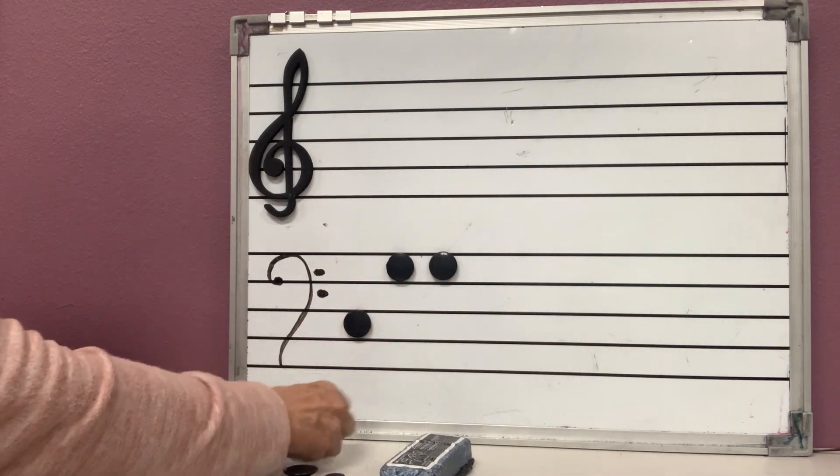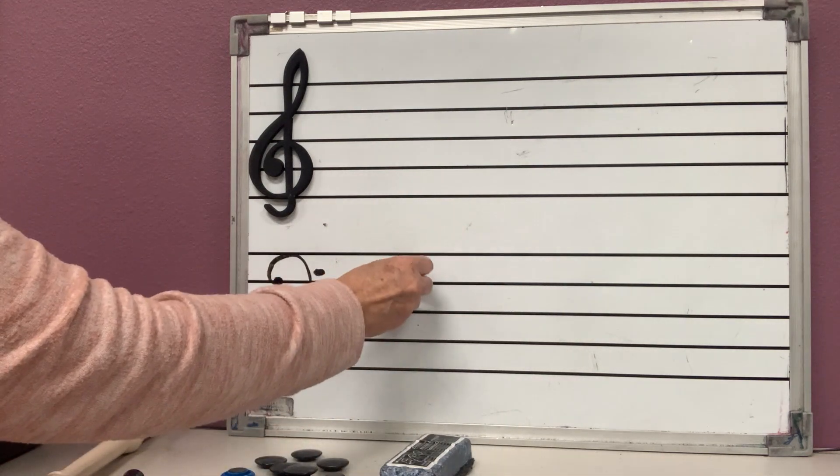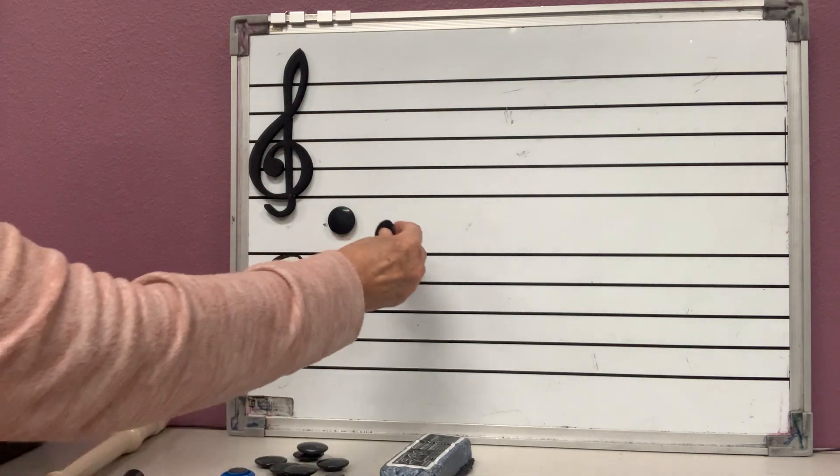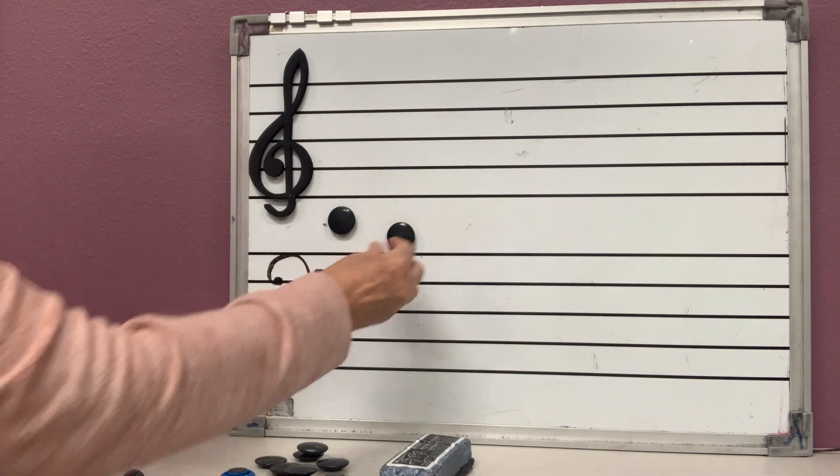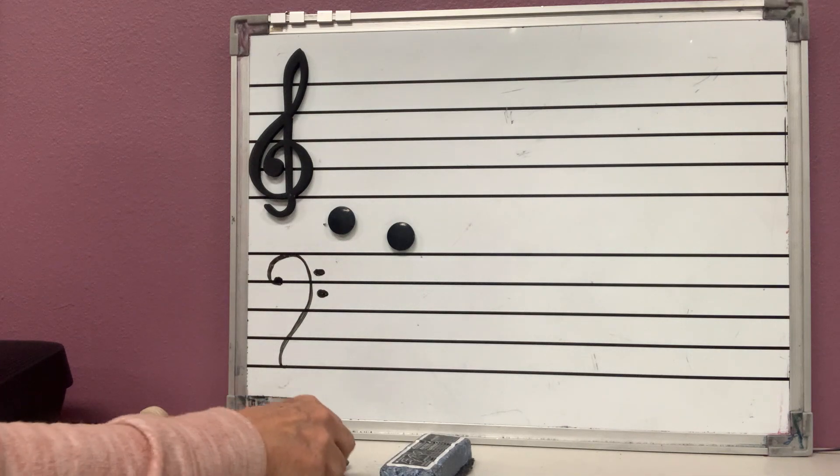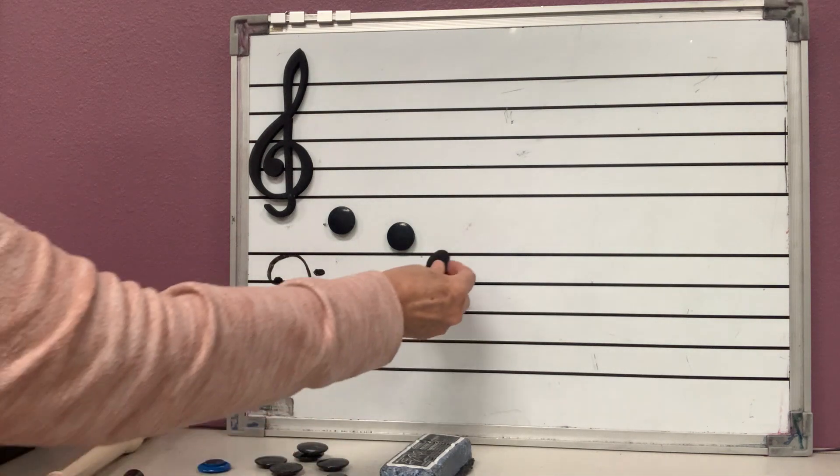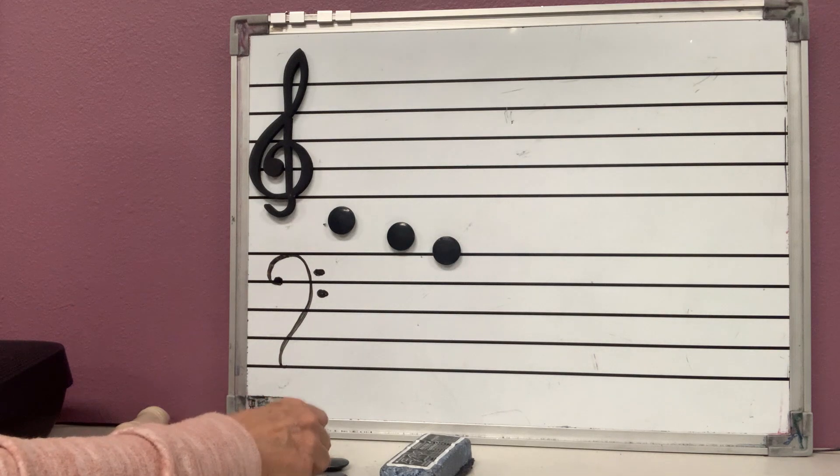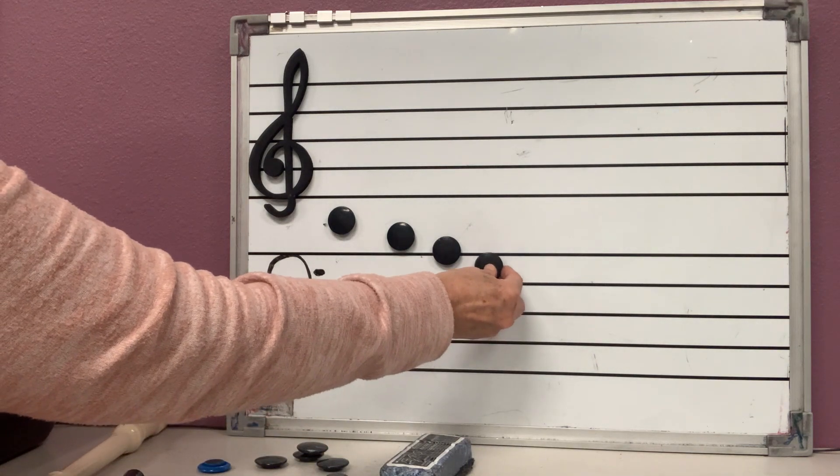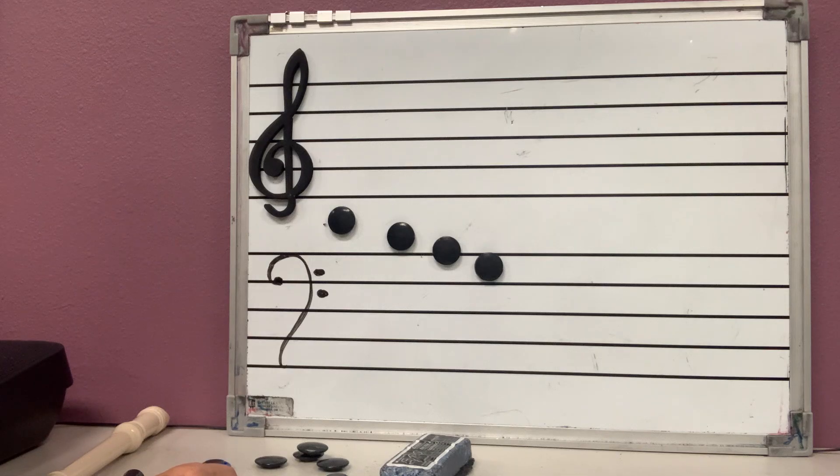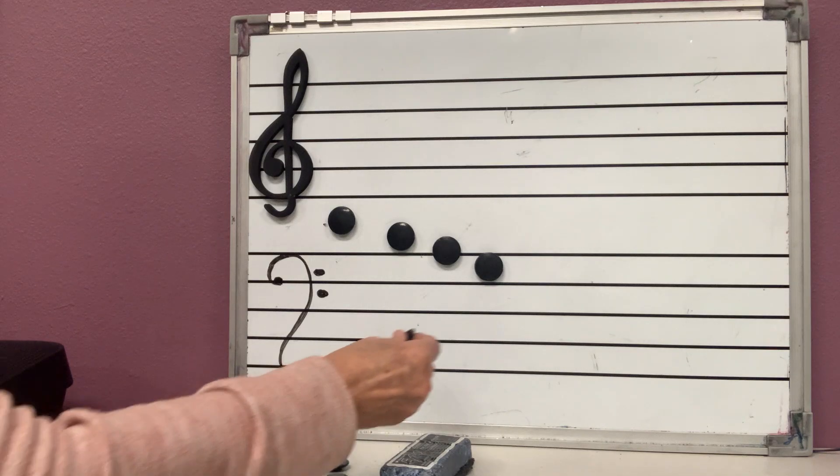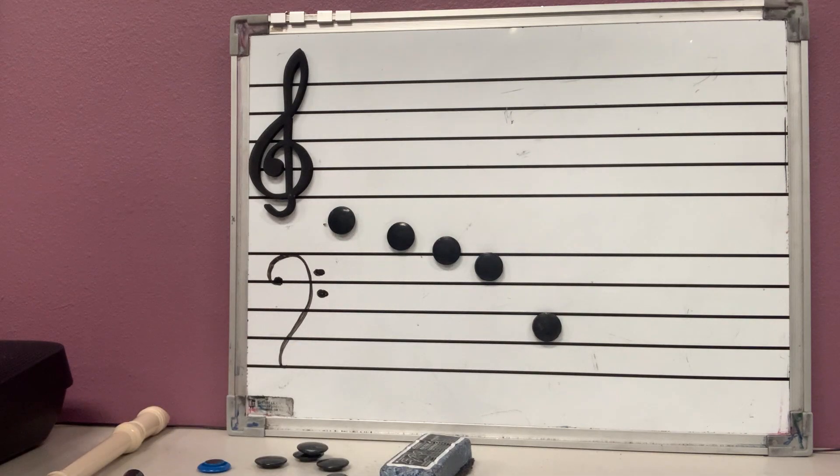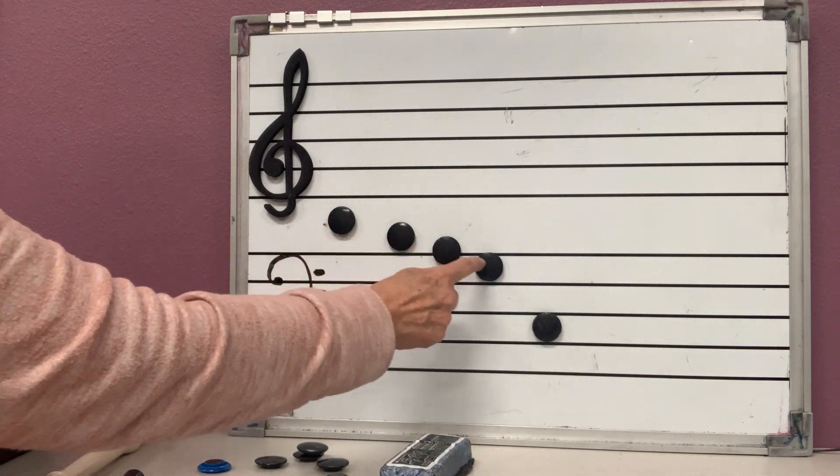So now, I'm going to ask you all the notes on bass clef that we know. Who's this one? C. Who's this one? The baby boy. And this one is always A. And this one is G. And this one all the way down here is cows. So we know C, B, A, G, C.